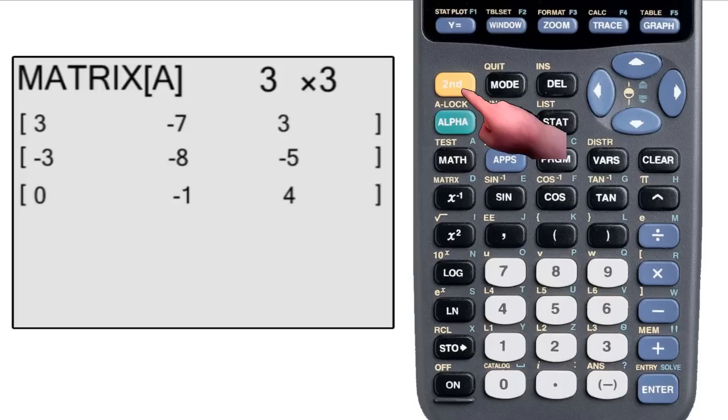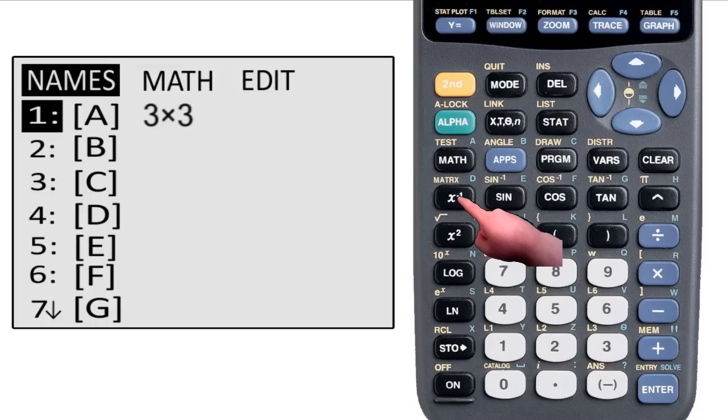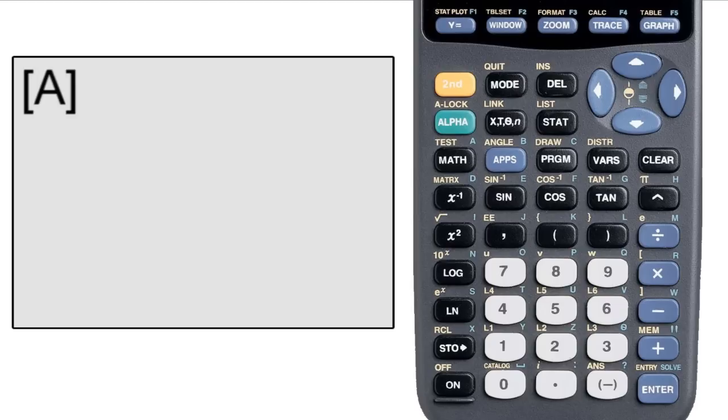Now go back to the home screen, then go back to the matrix menu and select the variable from the first page. It takes you back to the home screen and puts the variable in the input string. Hit enter to see the matrix.